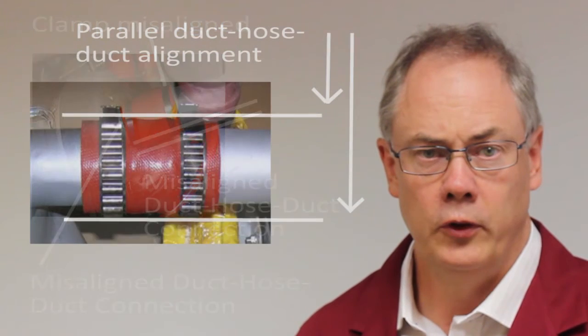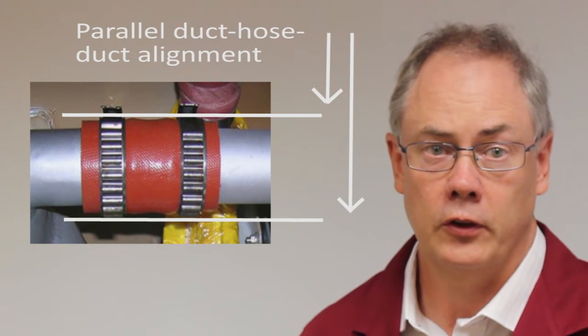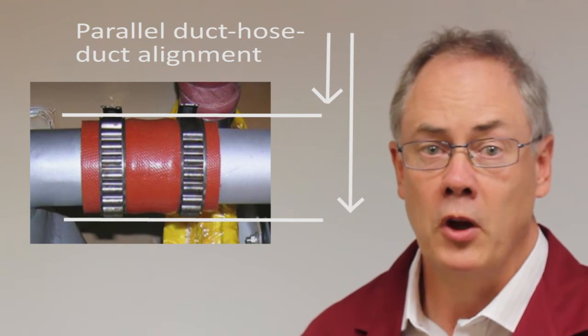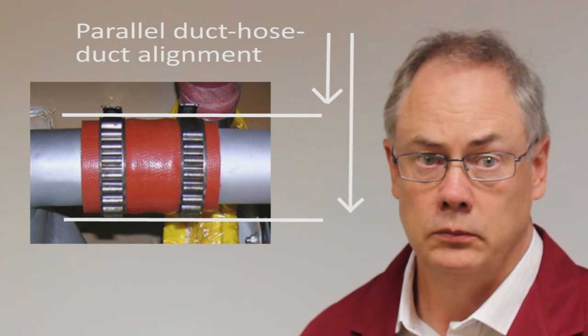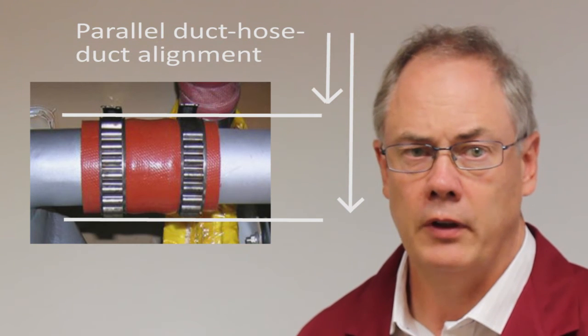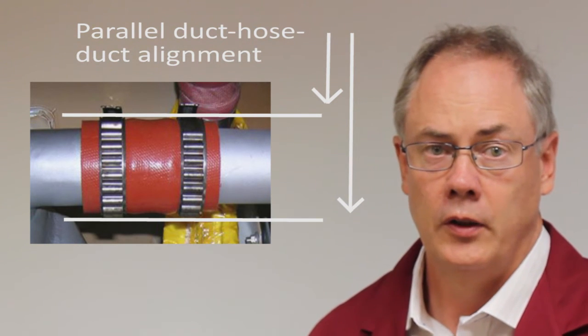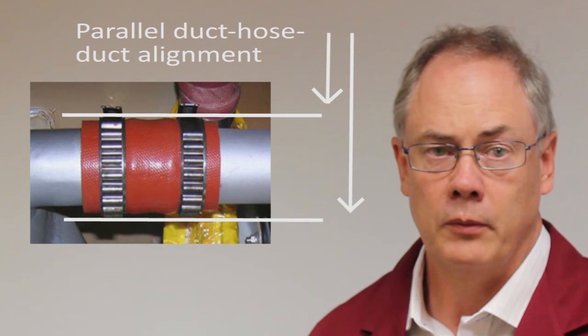Alignment of all hose and duct connections must be parallel, with the hose fitting squarely around the circumference of the duct. These are some examples of corrective actions for misalignment.